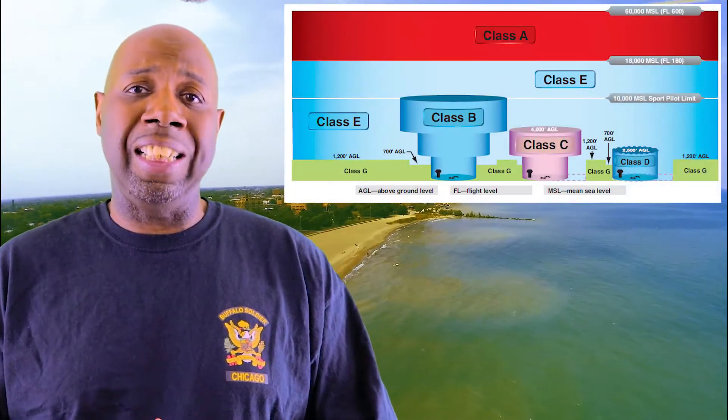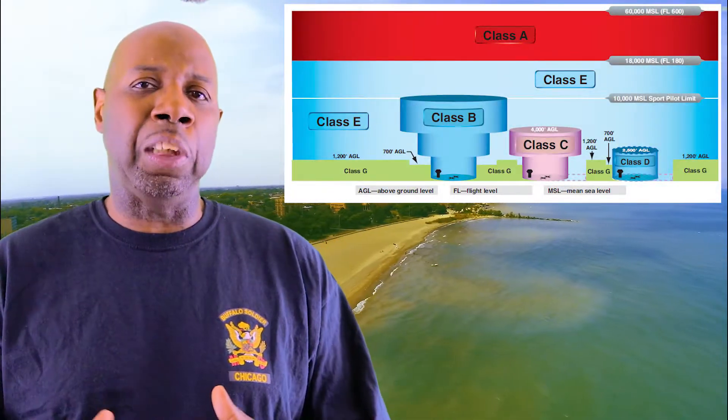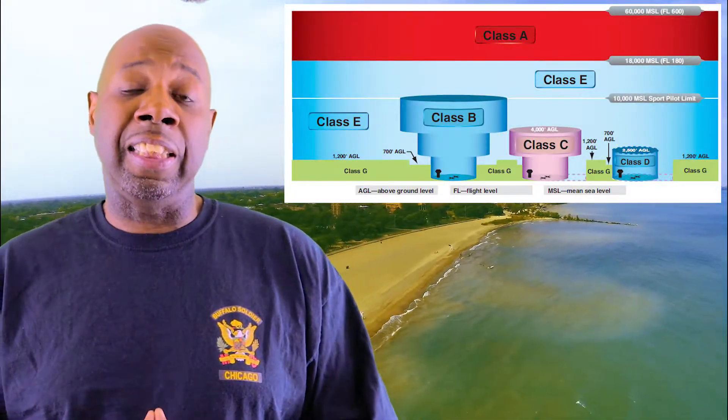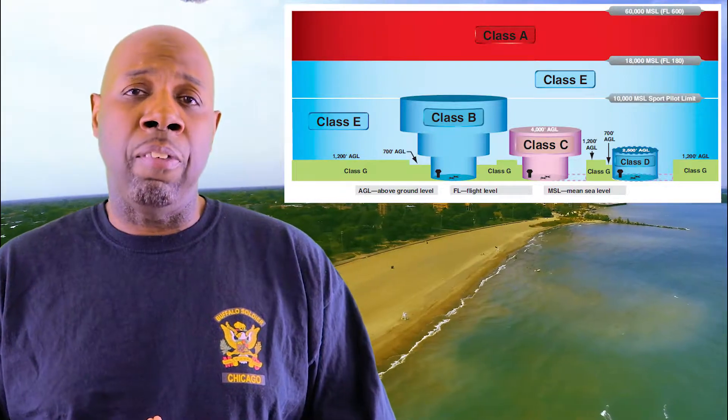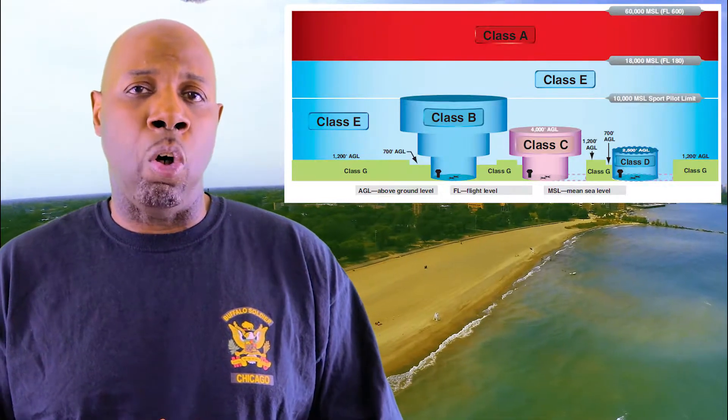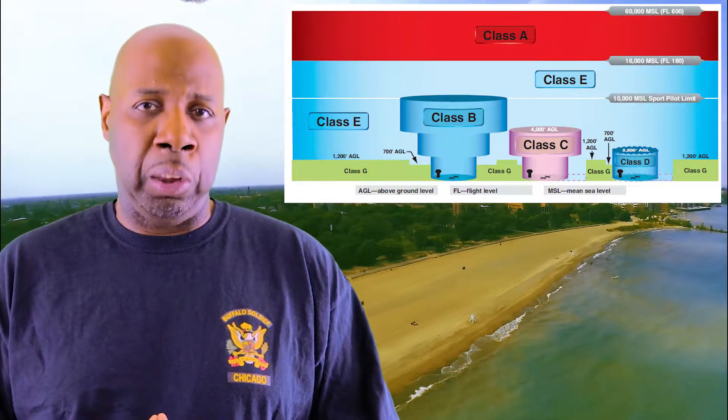Class C airspace is like Class B airspace in the sense that it is controlled airspace and requires authorization prior to entry. As you see, Class C airspace is a step down from Class B or Bravo airspace.